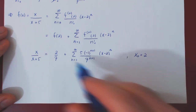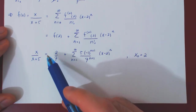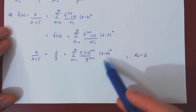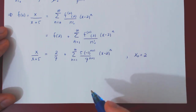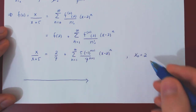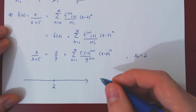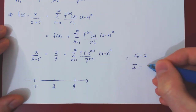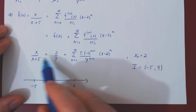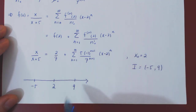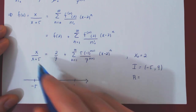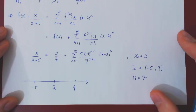The natural question to ask is: for which values of x is the equality valid between the function and its Taylor series centered at 2? You can tackle this using the ratio test or root test on this Taylor series, and you will find that the interval of convergence goes from negative 5 to positive 9, excluding both endpoints. So this equality is valid for x strictly between negative 5 and 9. The distance from the center 2 to either endpoint is 7, so the radius of convergence of the Taylor series of x over x plus 5 centered at 2 is equal to 7.